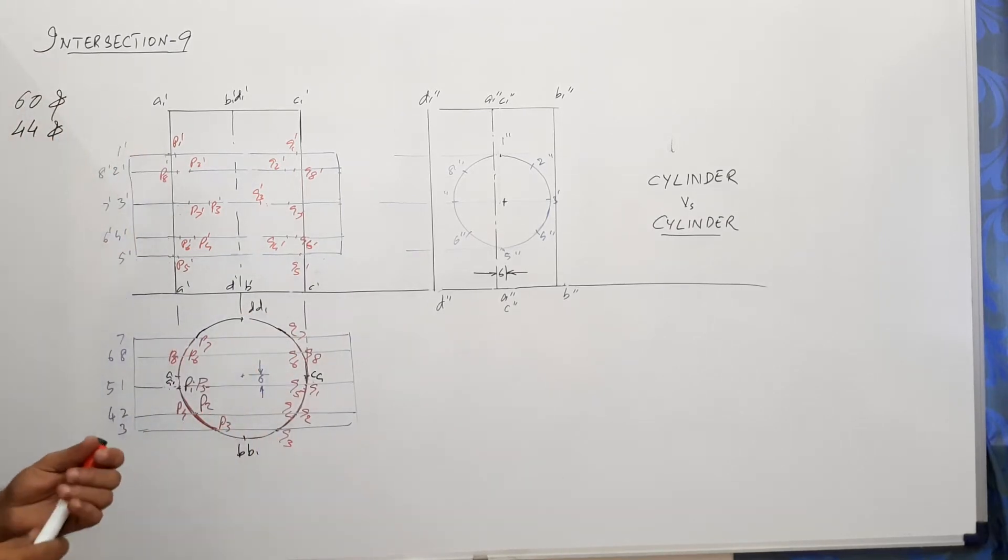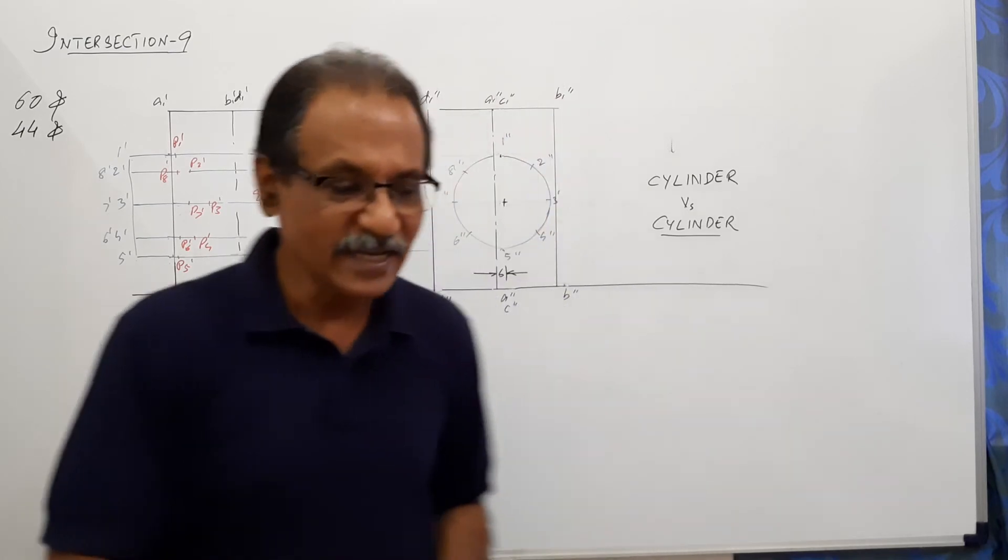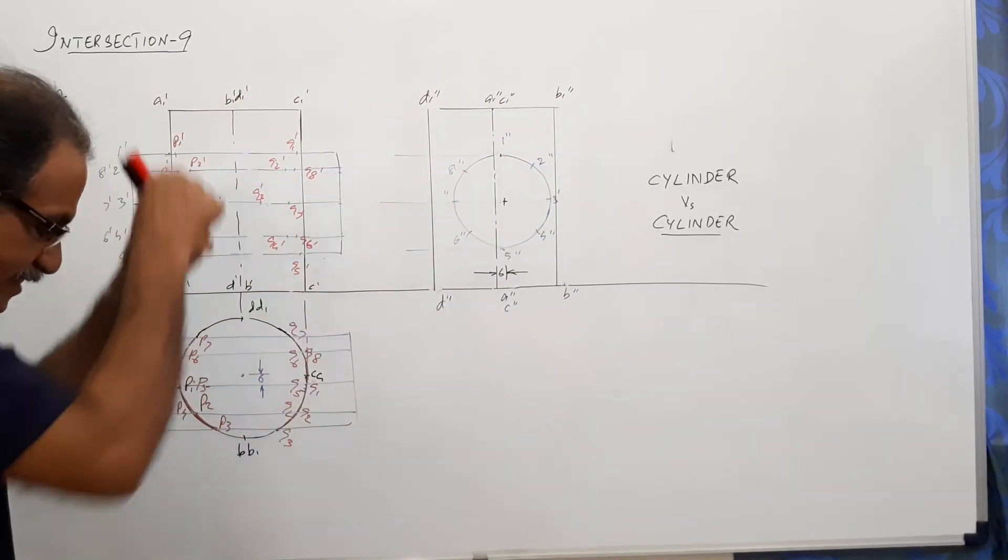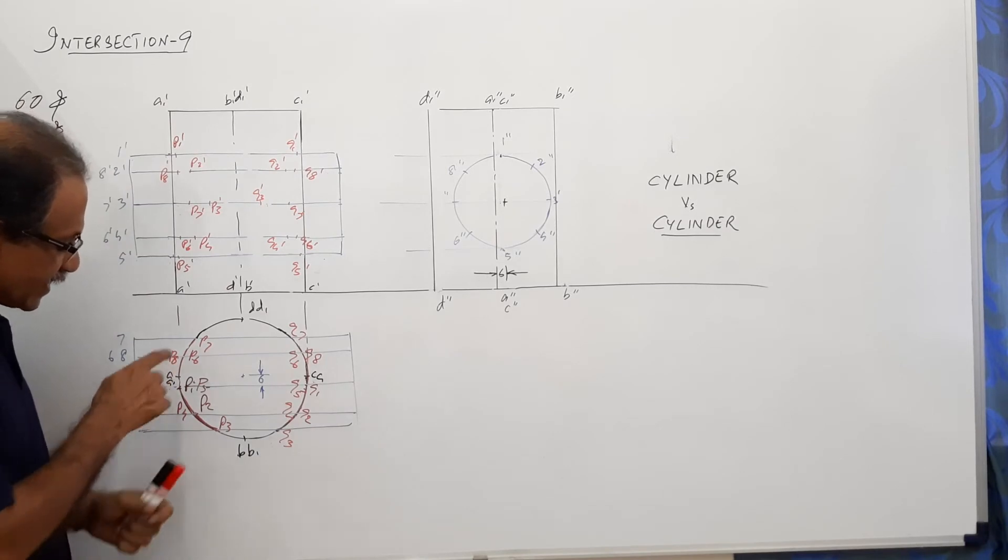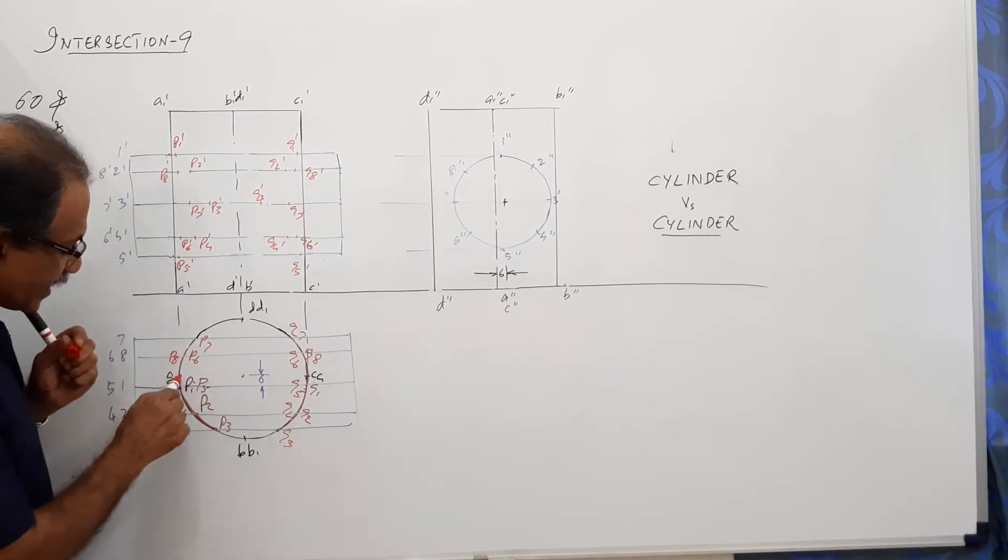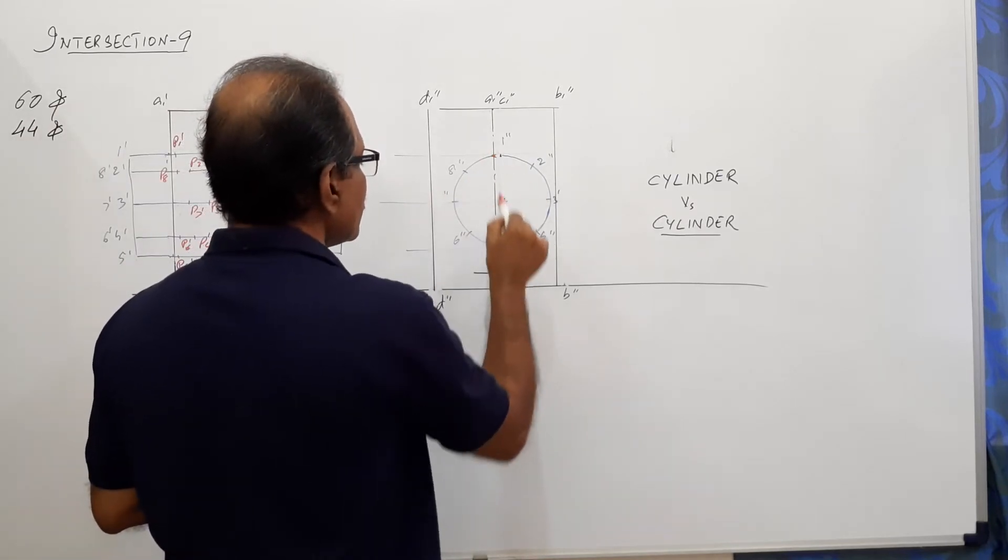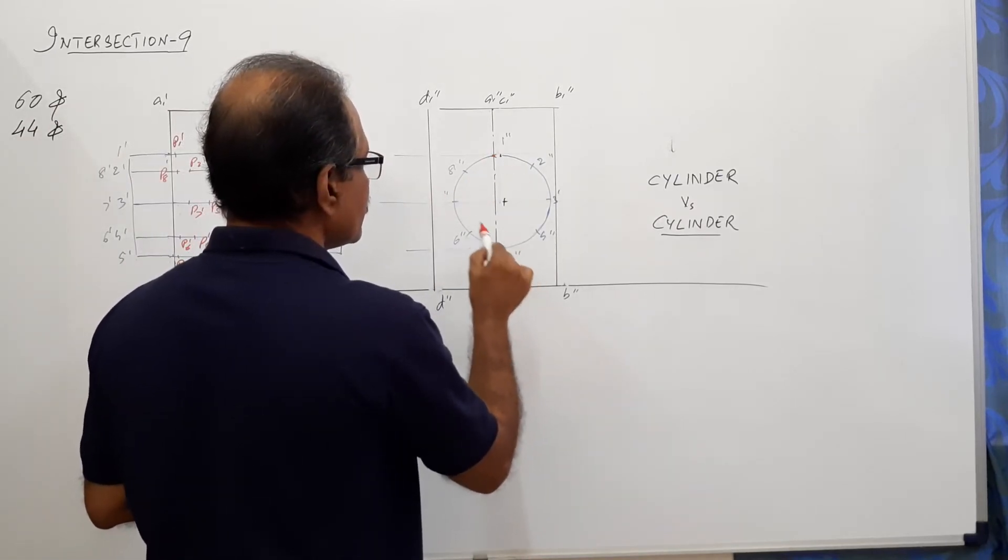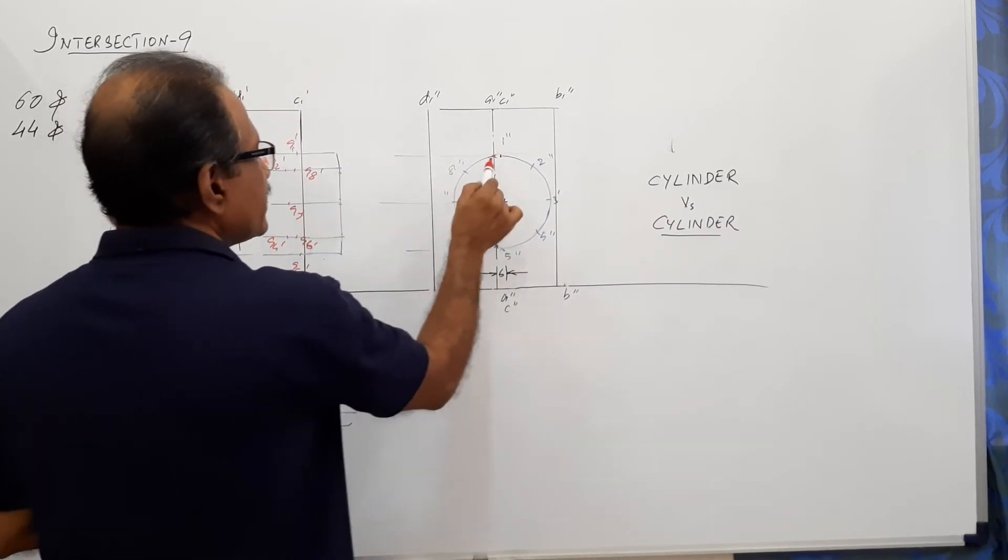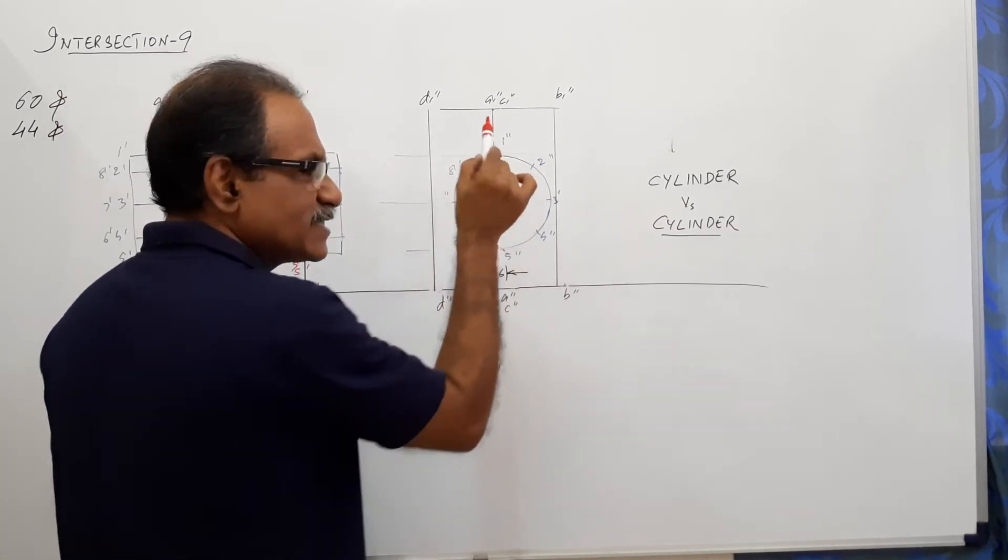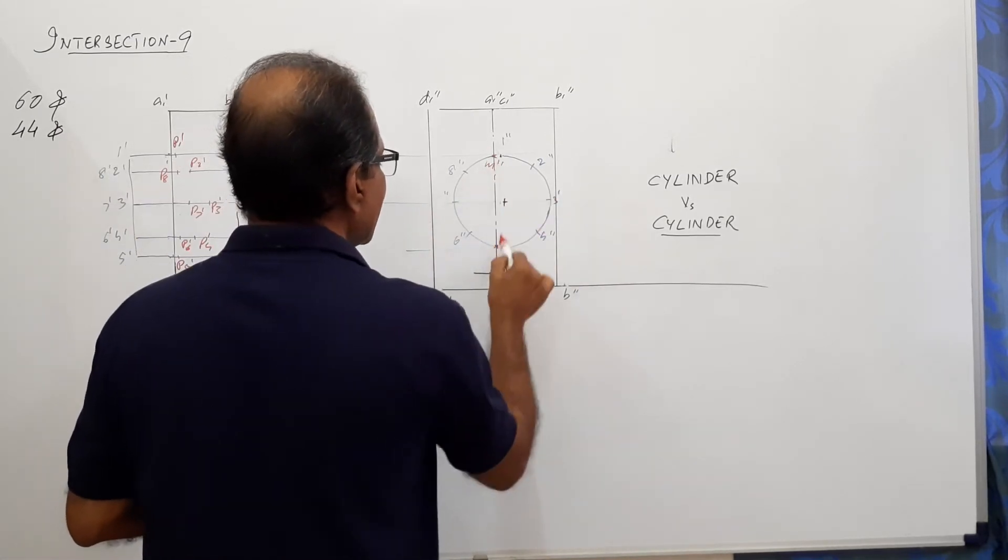Now, the question is, is it sufficient? No. It is not sufficient. Why it is not sufficient? The vertical generator, A1 dash, cuts the surface of the horizontal cylinder at this point which is visible here. The horizontal line through 1 dash is this. But this point lies a small distance below level of 1 dash.